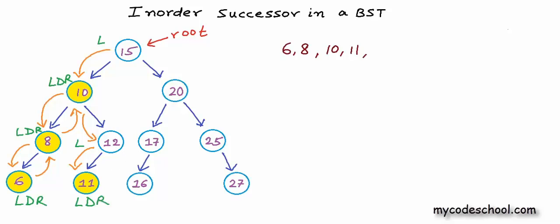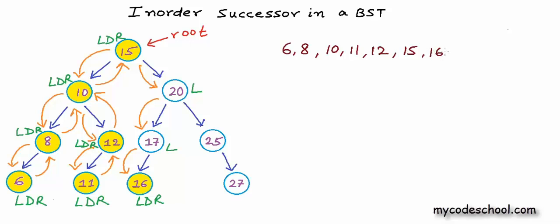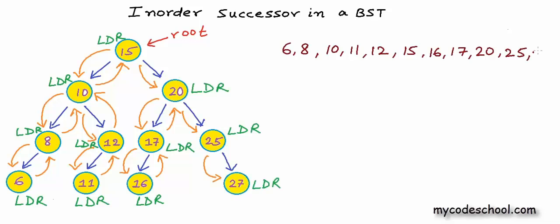For node with value 11, there is nothing in right, so we go back to its parent and visit node 12. After 11, we have 12. There is nothing in right of 12, so that call finishes and we go to its parent. Now we are coming back to 10 from right, so it is already visited. We go to its parent — node with value 15, coming from left — so it is unvisited and we visit it. Continuing on: successor of 15 would be 16, then 17, then 20, then 25, and the last element would be 27.